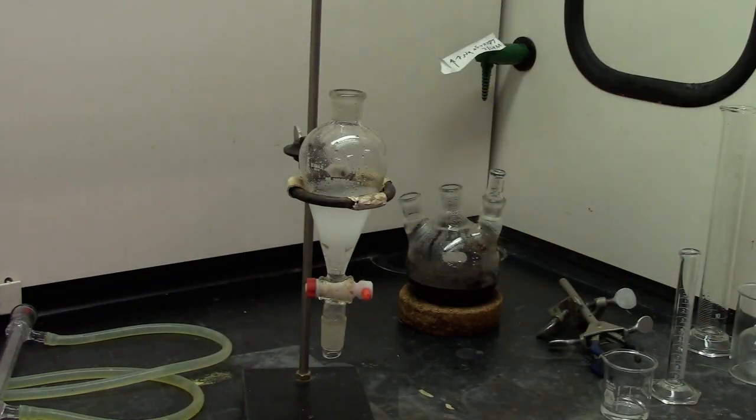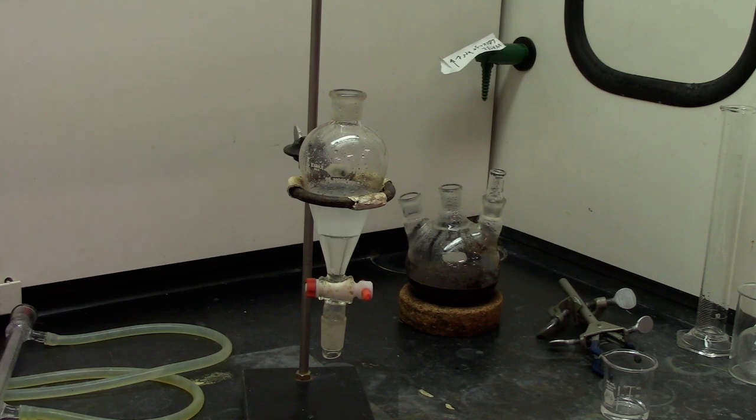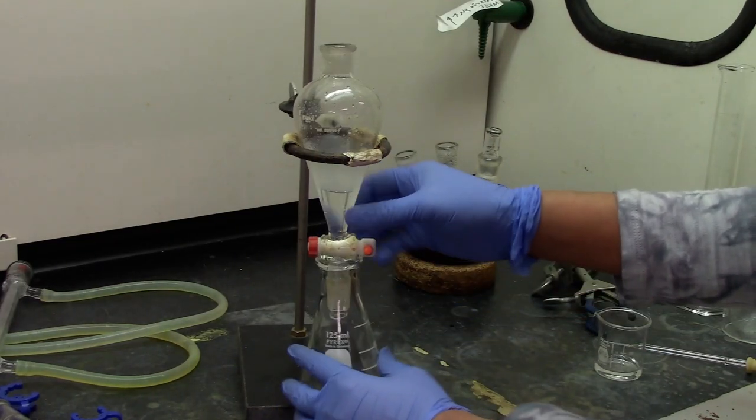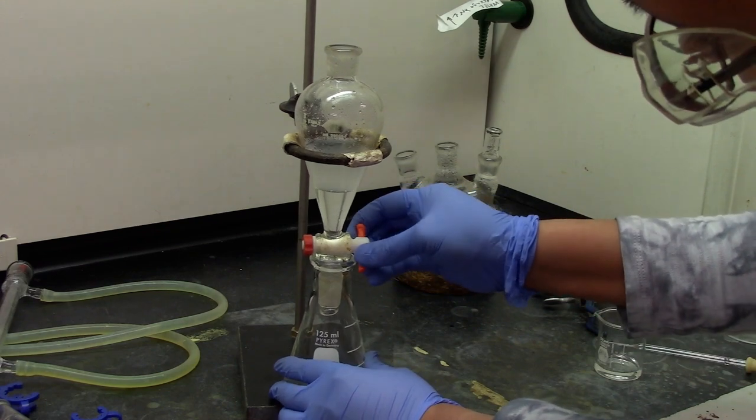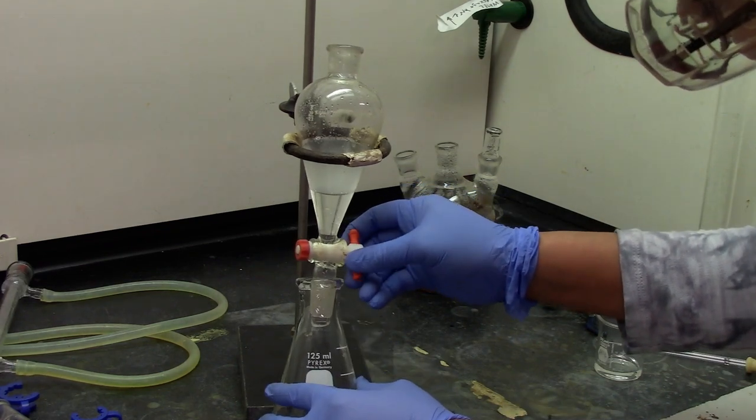Uncap the separatory funnel and let the two layers separate. Once the two layers separate, collect the bottom layer into a clean, dry, unmeted flask.